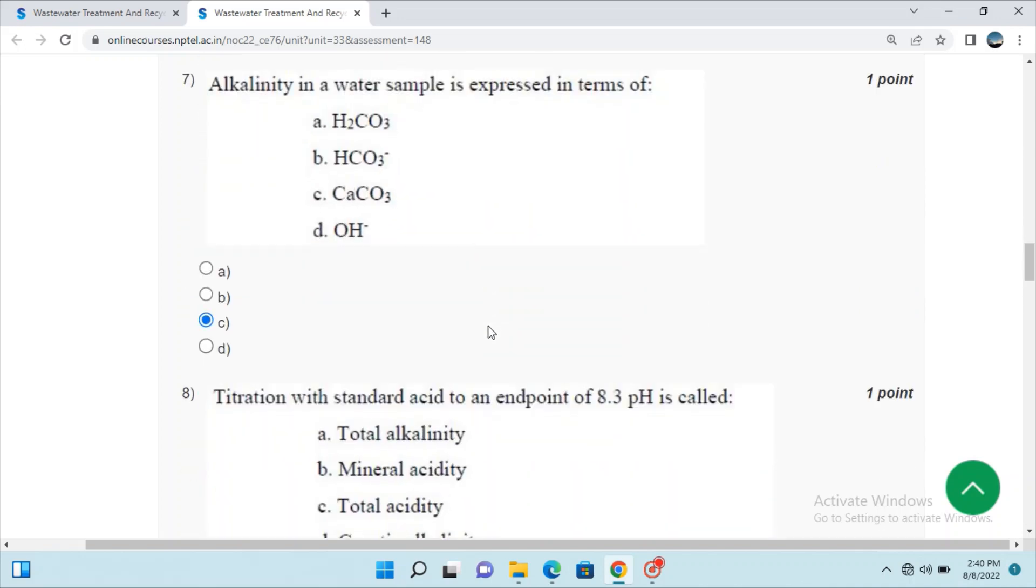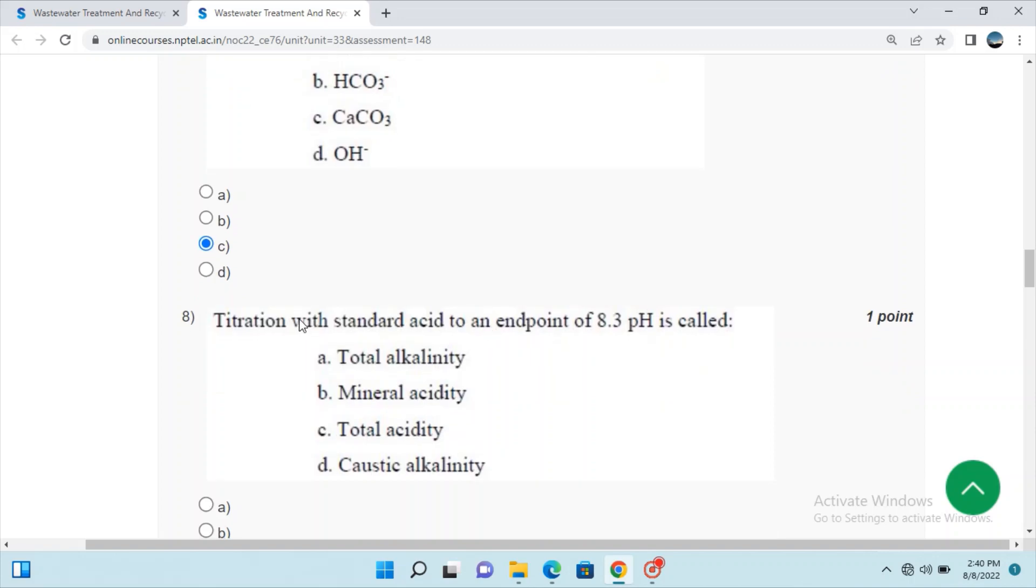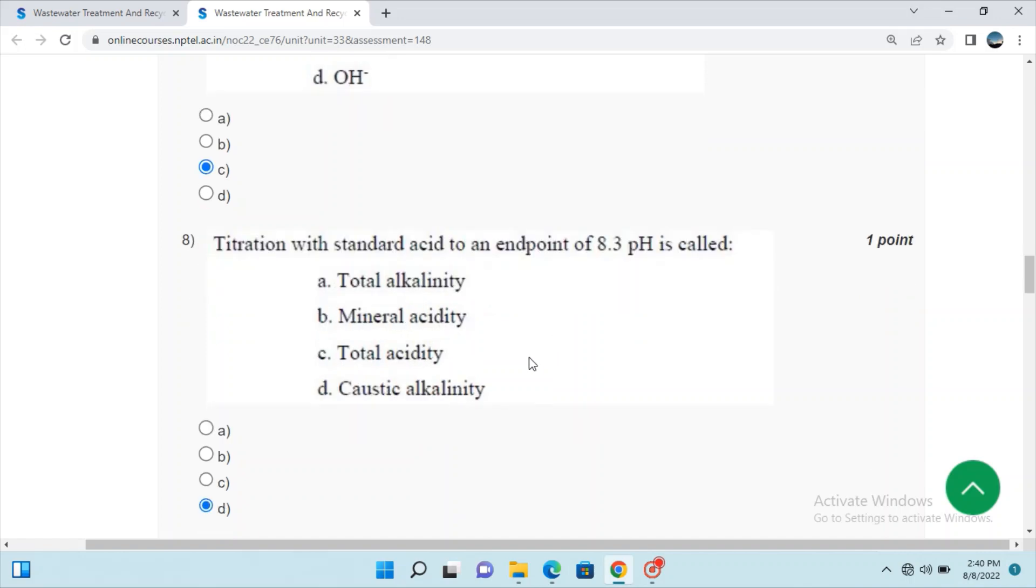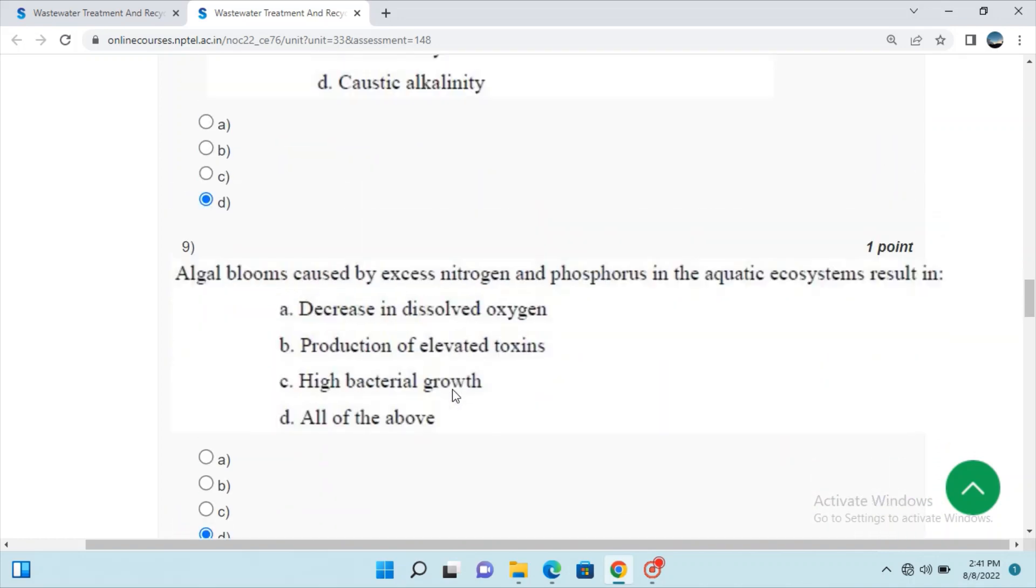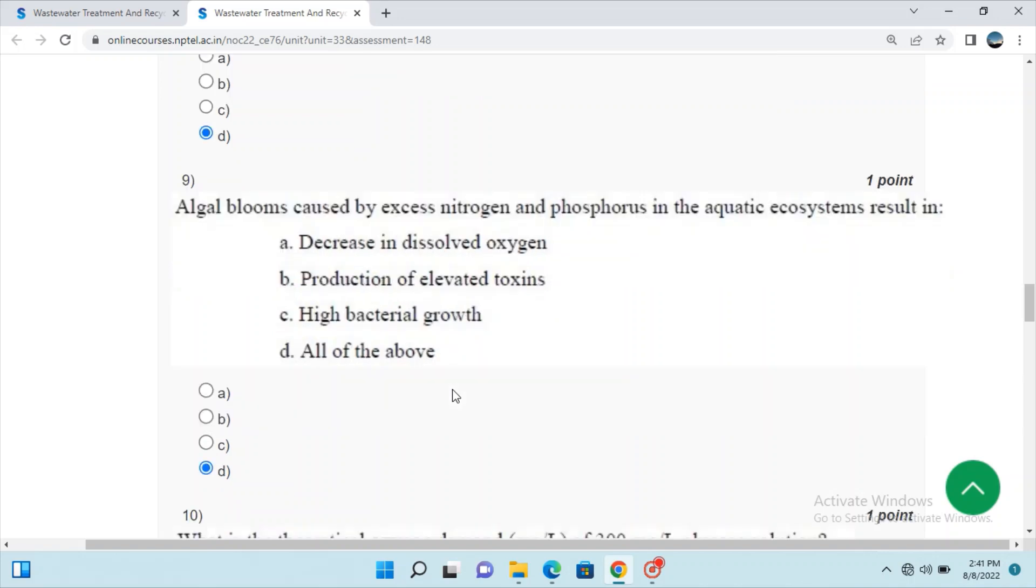Question 7: Alkalinity in water sample is expressed in terms of CaCO3, option C. Question 8: Titration with standard acid to an endpoint of pH 8.3 is called caustic alkalinity.